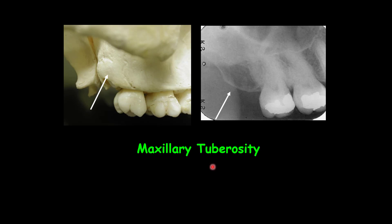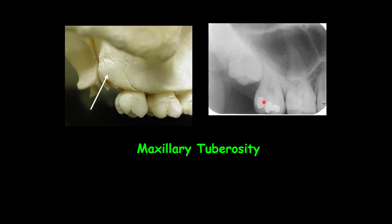The maxillary tuberosity is at the posterior lower part of the maxillary surface and is a kind of rounded eminence, especially prominent after the eruption of the wisdom teeth. This is the maxillary tuberosity on the periapical imaging — you can see it here, and underneath the maxillary tuberosity you can see a wisdom tooth that is still impacted.